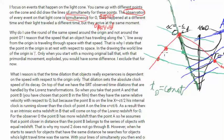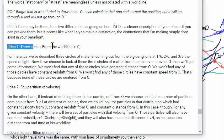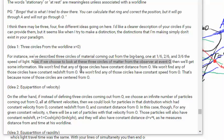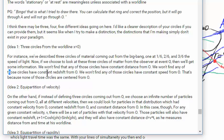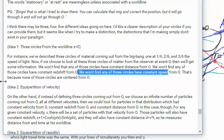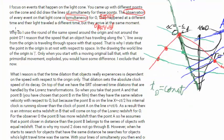Why does Paul use the round with the same speed around the origin, and not the round with the same speed around point O? That's a good question, and he's perfectly legitimate doing that. I called it in my last post — I called this idea one — three circles from world line x equals zero. I merely made the point that if we choose to look at those three circles of matter from the observer at point O, we won't find that any of those circles have constant distance, constant redshift, or constant speed from O. That's because none of those circles are centered from O.